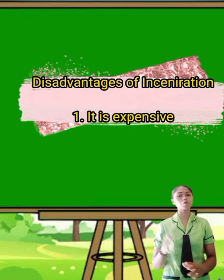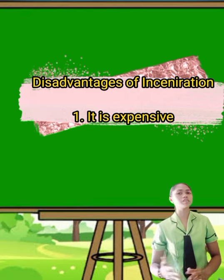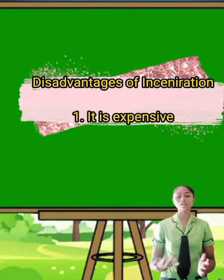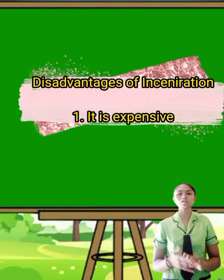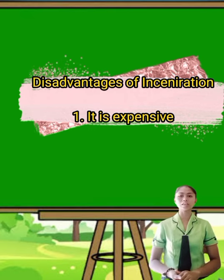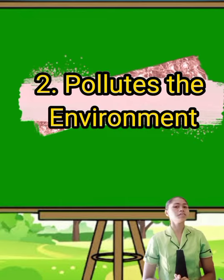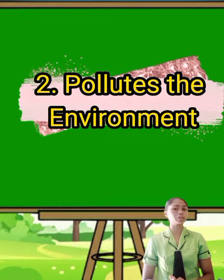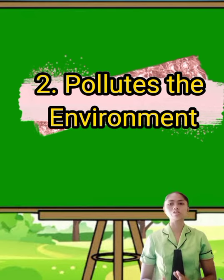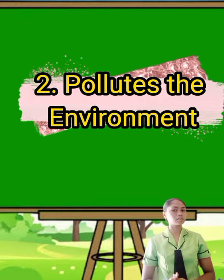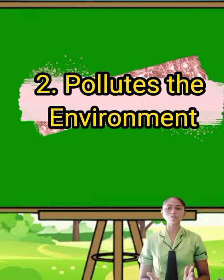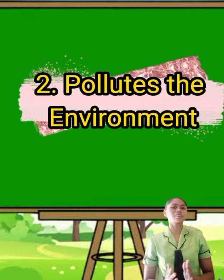Let's look at the disadvantages of waste incineration. First, it is expensive. The installation of an incineration plant is an expensive process; particularly, the cost of constructing the infrastructure and operating the incineration plants are very high. Second, it pollutes the environment. Incinerators produce smoke during the burning process. The smoke produced includes acid gases, carcinogenic dioxin, particulates, heavy metals, and nitrogen oxide — all of which are poisonous to the environment. Research has shown that dioxin produced in the plant is a cancer-forming chemical.